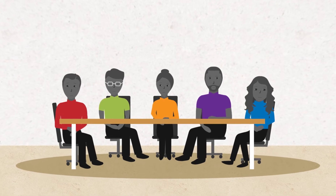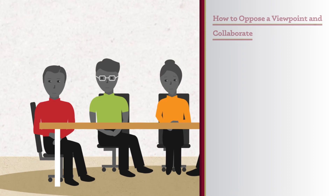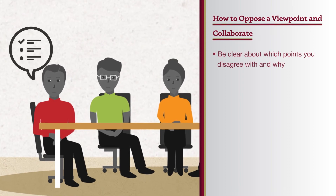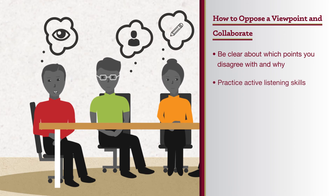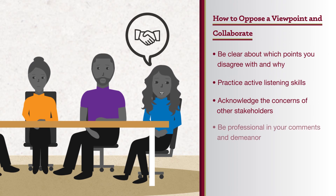Combining the ability to oppose a viewpoint and to collaborate can be difficult. To convey to other stakeholders that you are listening, be clear about which points you disagree with and why. Practice active listening by making eye contact, remembering names, and refraining from multitasking. Be respectful by acknowledging the concerns of other stakeholders and giving them the opportunity to express their views. Be professional in your comments and demeanor; if someone else is not, request the chair to review the group rules and consequences of such behavior.